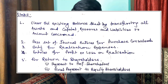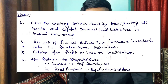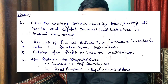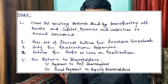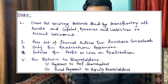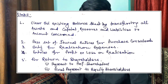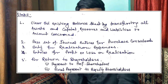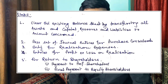Let's go to Journal Entries in the books of Transferor Company. The first step is to clear the balance sheet — assets, liabilities, capital, and reserves. Then you pass a set of three journal entries. Third step is entry for realization expenses. Fourth step is entries for profit or loss on realization. Fifth step is for return to shareholders. So: step one, clear the balance sheet; step two, set of journal entries for purchase consideration; step three, entry for realization expenses; step four, for profit or loss; step five, return to shareholders.